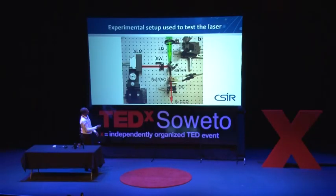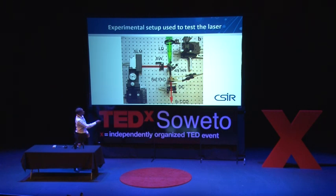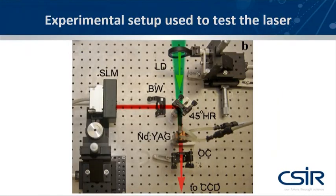This is what it looks like in the lab. It's just a similar kind of situation here, where this would be an LCD, that's what comes out, and this would be the other mirror. This is just something to avoid the pump — the electrical current that comes and excites the whole thing. So your laser will come out in that other direction.